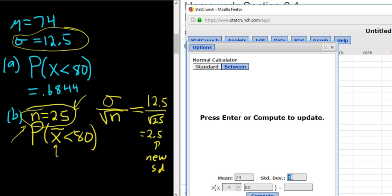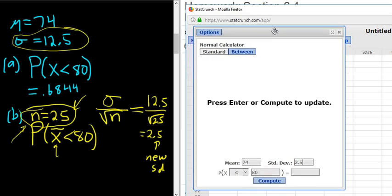The standard deviation has changed though. So instead of 12.5, we're going to use 2.5. That's the whole point of the question. So in part A, we used 12.5. Part B, they gave us n equals 25, so we have an average. The question is about an average, so we first have to compute the new standard deviation. So important, click Compute.